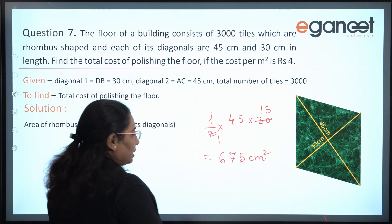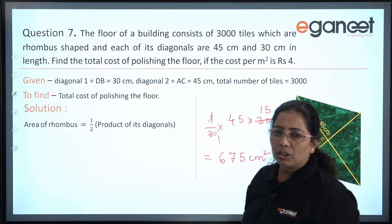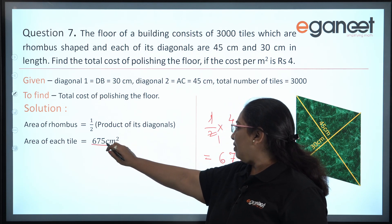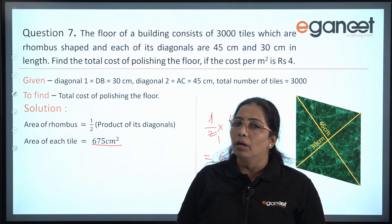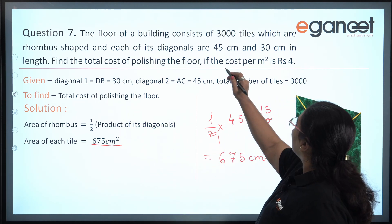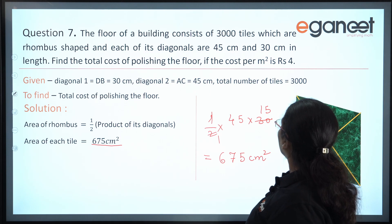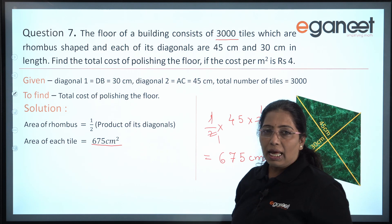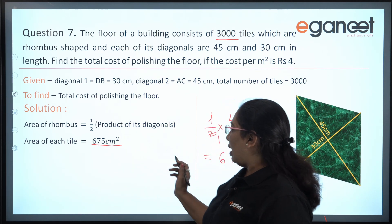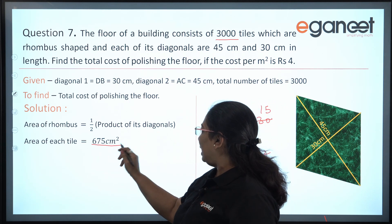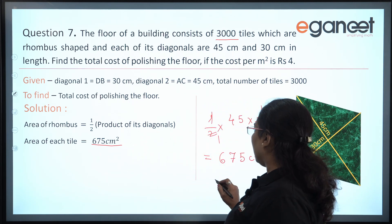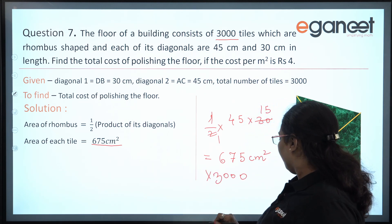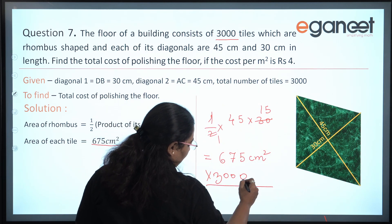So the area of each tile is 675 cm square. On the floor of the building there are 3000 tiles, so we have to multiply this area by 3000.